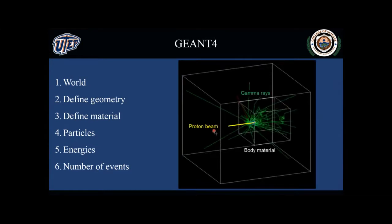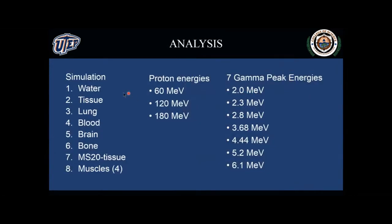We need a beam of protons and then a bunch of gamma rays that are being produced. Every time we do it we're going to be creating an event, and we're going to run events in the thousands of millions. The materials that we're going to be analyzing are: first, water, because this is the standard and we're going to be comparing everything against water; and then tissue, lung, blood, brain, bone, and muscle. The proton energy that we're going to be using is comparable to those used in proton beam machines, anywhere from 60 to 180 MeV.